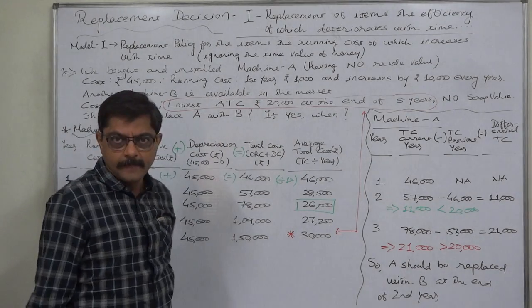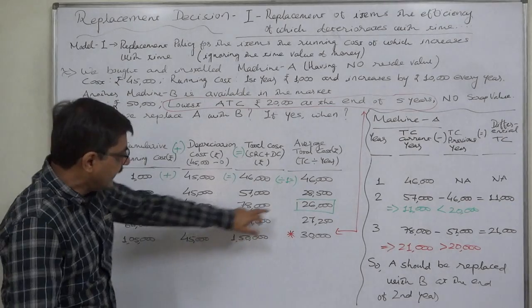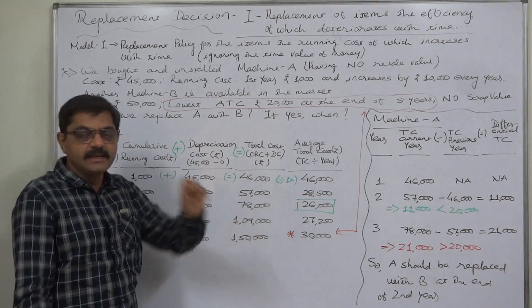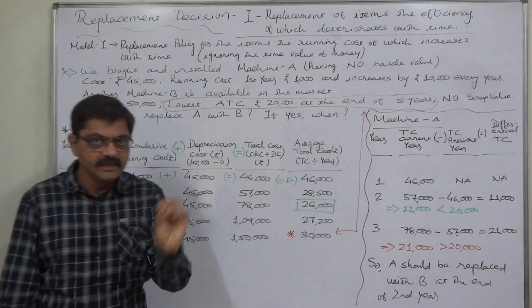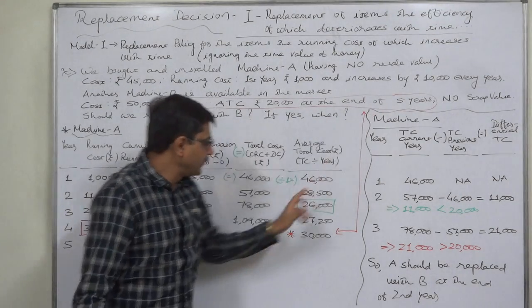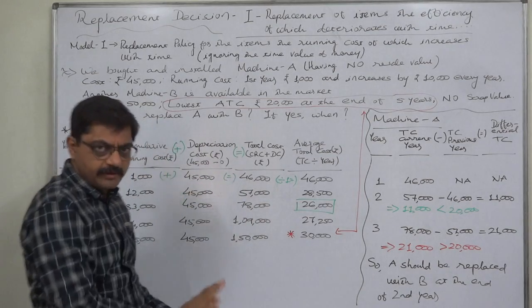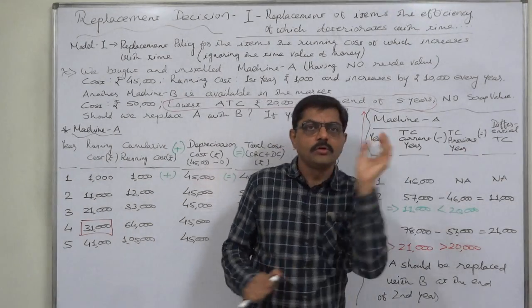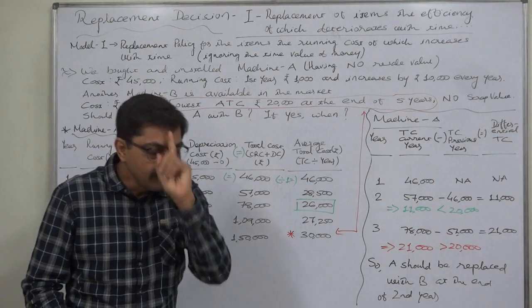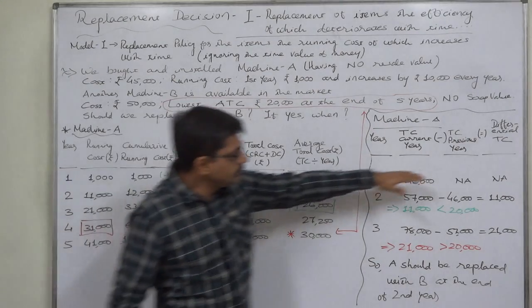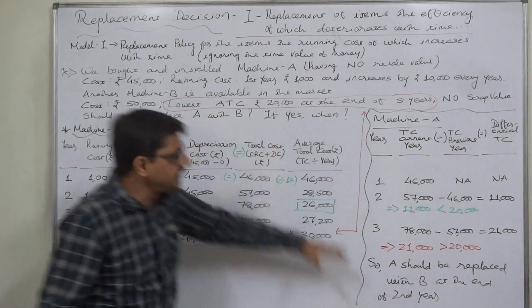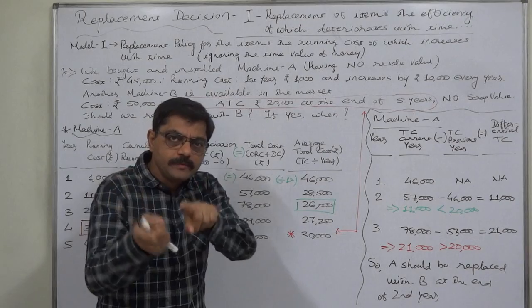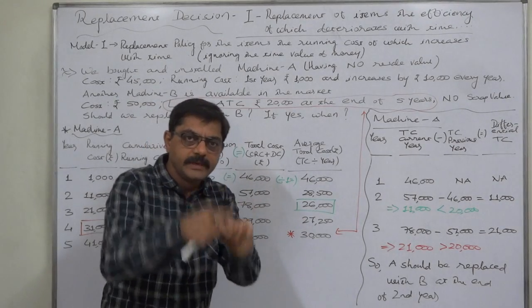Should we replace A with B? Machine A has an average annual cost of Rs. 26,000 when replaced; Machine B has Rs. 20,000 — something goes in favor of B. To decide properly, we compare the incremental or differential total cost of A. When the differential cost of the old machine exceeds the lowest average total cost of the new machine, that is the point to replace the old with the new — i.e., replace A with B.